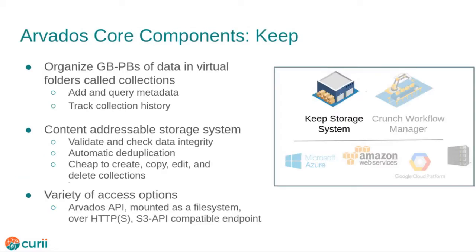The Arvados storage system is called Keep. As I mentioned, it organizes sets of files into a collection. A collection can have additional user metadata associated with it in the form of searchable key-value properties and records the history of changes made to that collection. To store data in a collection, the files are broken up into a set of blocks up to 64 megabytes in size, which are hashed to get an identifier used to store and retrieve the data block. The identifier can be used to validate the content of the block. It also provides for deduplication, as the same data block can be referenced by multiple collections. This means that it is cheap to copy and modify collections as only the block identifiers need to be copied and not the actual data.